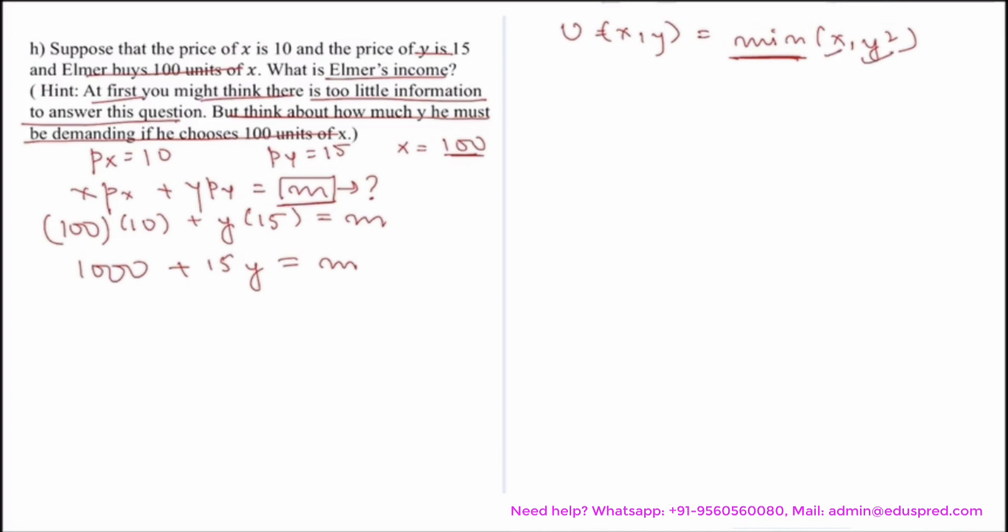So we have another equation as x is equal to y squared. That means Elmer would always consume at this situation.